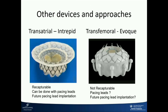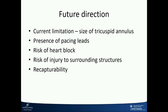Two other devices have now been used in the tricuspid area. One is the transatrial Intrepid, which was done in Colombia a few months ago. The advantage of this device and delivery system is that it's recapturable—if you are not in the ideal position, it can be recaptured. It can also be done with pacing leads, and if pacing is needed, you could go between the two gaps of the stents. EVOKE is another device, with one or two cases done in Canada. It's not recapturable, but it has a 28 French delivery system and can be done transfemorally. In the future, we're going to see more devices designed for mitral being applied in tricuspid, but the main problem remains the size of these devices and its implications.